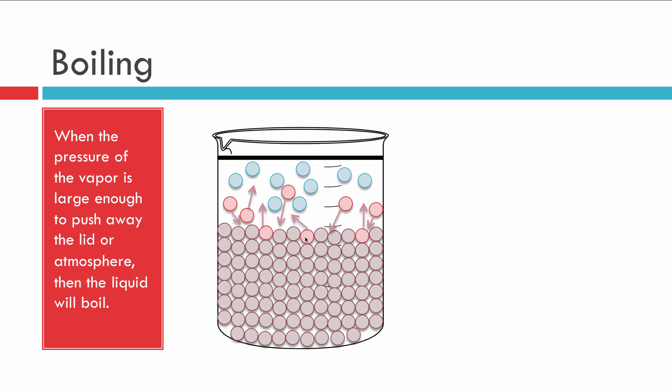Now let's get to the concept of boiling. We've all seen and talked about it most of our lives, but we may have it improperly in our heads. The boiling point is a temperature — it's the temperature at which boiling occurs. But that's not what boiling is. Boiling is not the same as the boiling point. Boiling is specifically when the vapor pressure is equal to the pressure pushing down on the vapor.